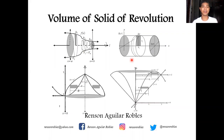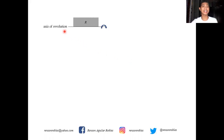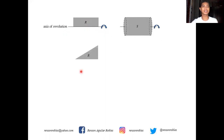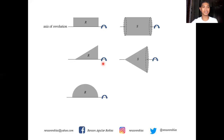In my previous videos, I showed you how to find the area of a region bounded by different curves. Now let us consider a region in the form of a rectangle and a line L as the axis of revolution. Revolving this rectangle over this line generates a right circular cylinder. If the region is a right triangle, we generate a right circular cone. And when the region is a semicircle, we generate a sphere. These three solids are what we call solids of revolution.